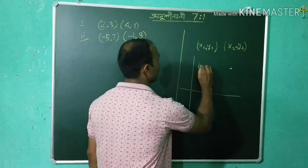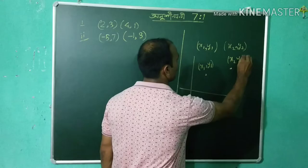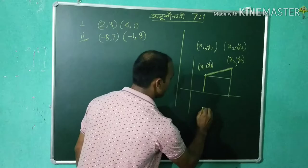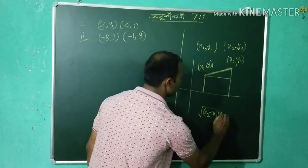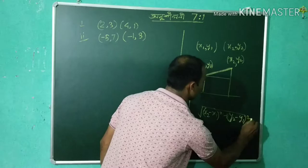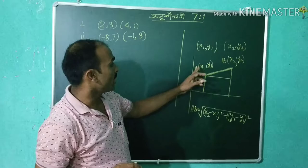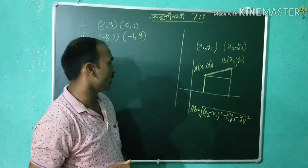The distance formula is the square root of (x2 minus x1) whole square plus (y2 minus y1) whole square.